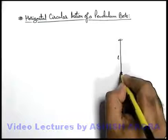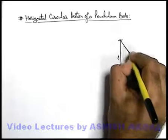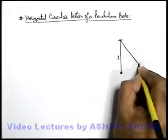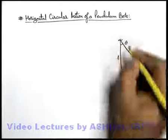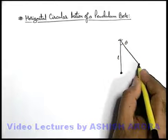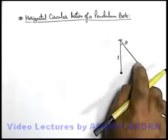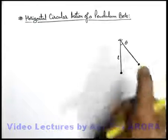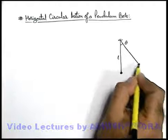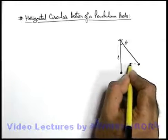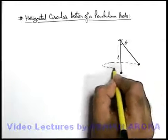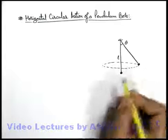If we tilt the simple pendulum to a particular position, say we tilt it by an angle theta, and we throw the bob in a direction perpendicular to the plane of this paper - say if we throw it in this direction inward or outward - we can imagine that as soon as we throw it inward, it may be possible that it starts revolving in a horizontal circular path.